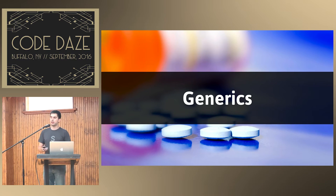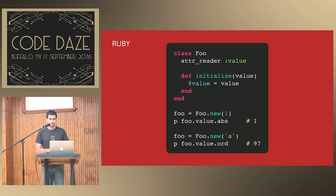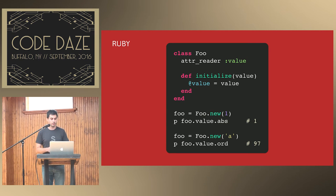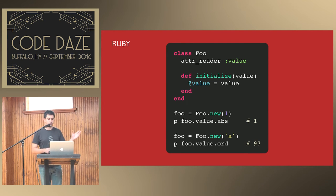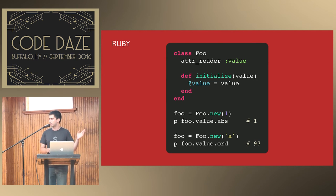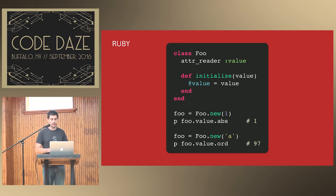Another feature Crystal has — as many typed languages do — is generics. In Ruby if you have a class Foo with a getter and a constructor that takes a value, you can create a Foo of integers or a Foo of characters and it just works. Ruby is very fan of the 'it just works' thing.